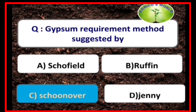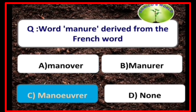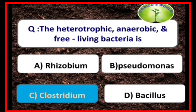Gypsum requirement method is suggested by Schoonover. Physical composition of cattle manure is FYM — farmyard manure. The word manure is derived from a French word. Clostridium is the heterotrophic, anaerobic, and free-living bacteria.